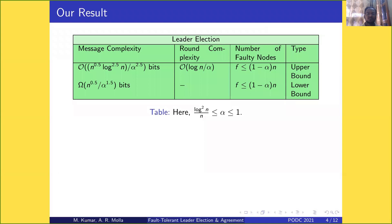Here is our result for leader election. Message complexity is O(n^0.5 * log^2.5(n) / α^2.5) bits, where α is the fraction of non-faulty nodes. Round complexity is O(log(n) / α), and the number of faulty nodes is (1-α)n to n.